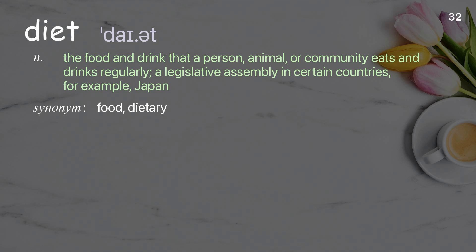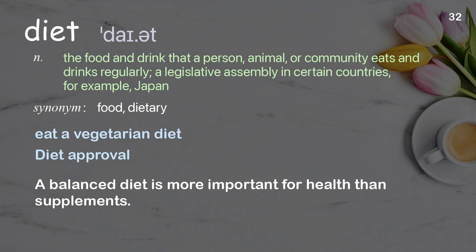Diet. The food and drink that a person, animal, or community eats and drinks regularly; also a legislative assembly in certain countries, for example Japan. Examples: eat a vegetarian diet; diet approval. A balanced diet is more important for health than supplements.